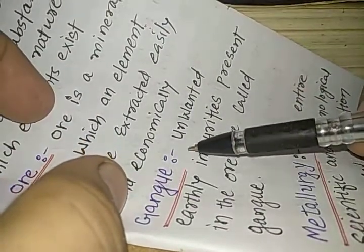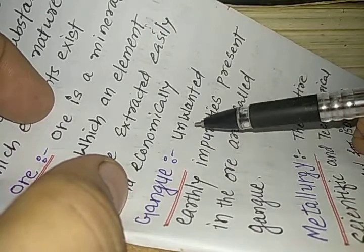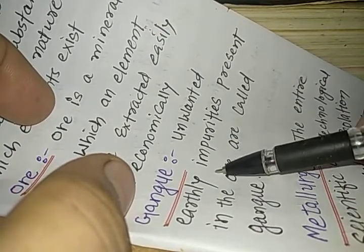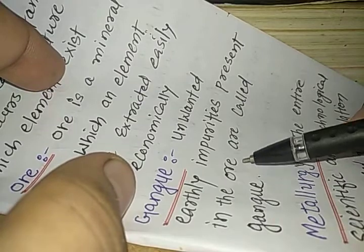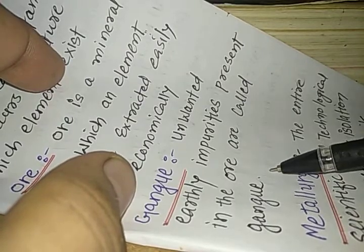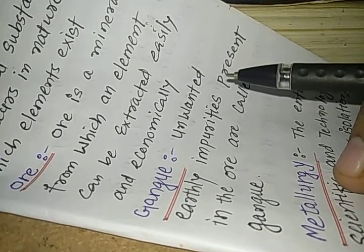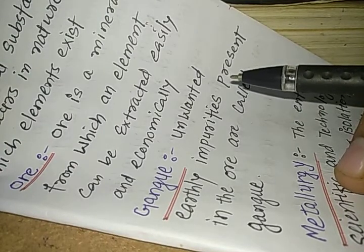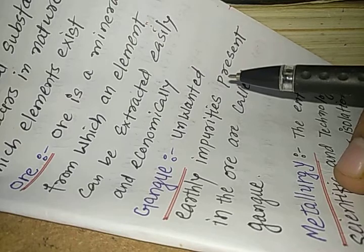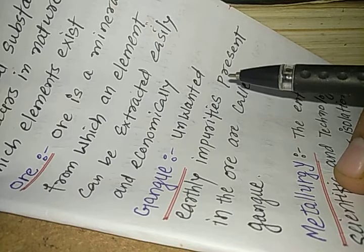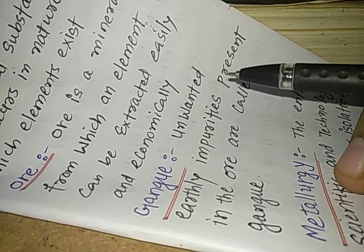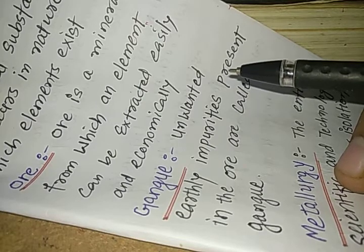Gang. So, what is Gang? Let us try to understand. Unwanted earthly impurities present in the ore are called Gang. If an ore is mined from the earth's crust my dear children, then they have some impurities like you know sand, they have sand particles, they have silica, they have clay, sometimes they have many other impurities. So, these impurities which are unwanted and they are found in the earth, they are known as the Gang.